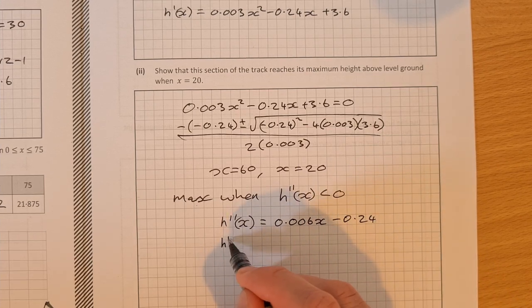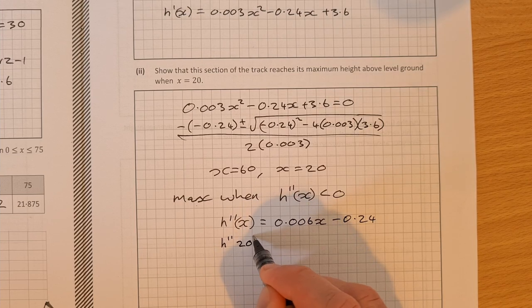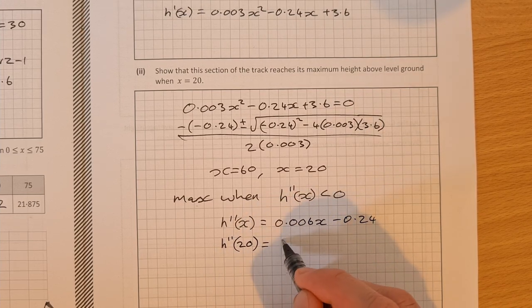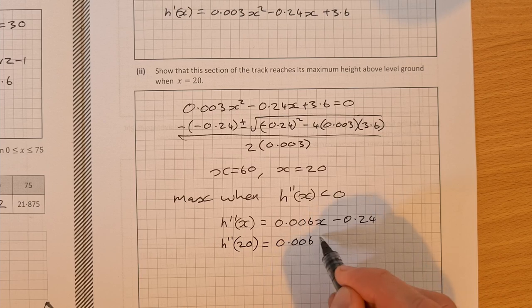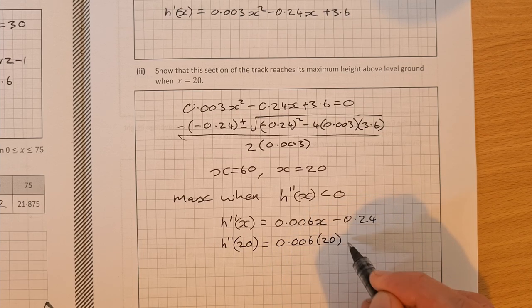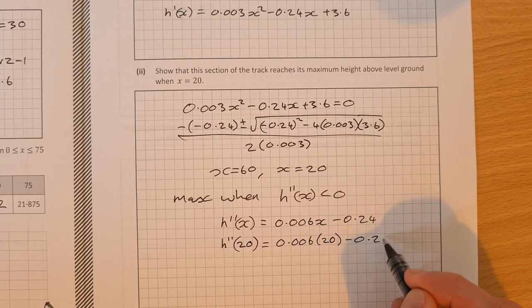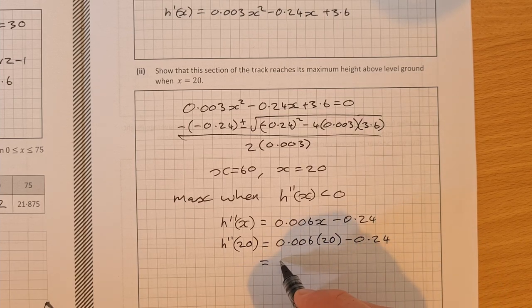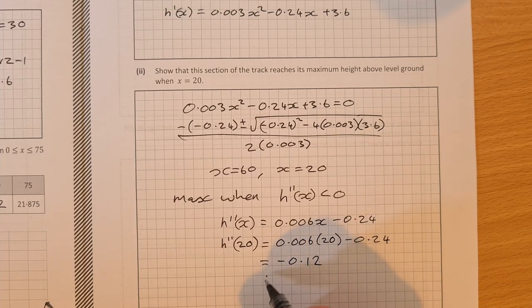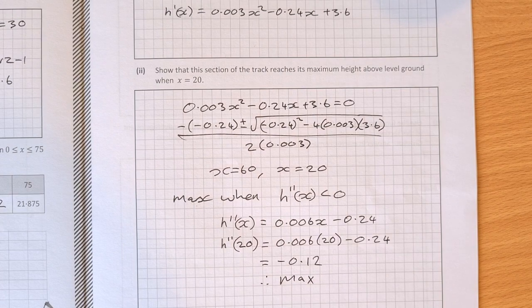We're going to find h double prime of 20, which is equal to 0.006 times 20 minus 0.24. And that works out to be equal to negative 0.12, and that means we have a max there at x equal to 20.